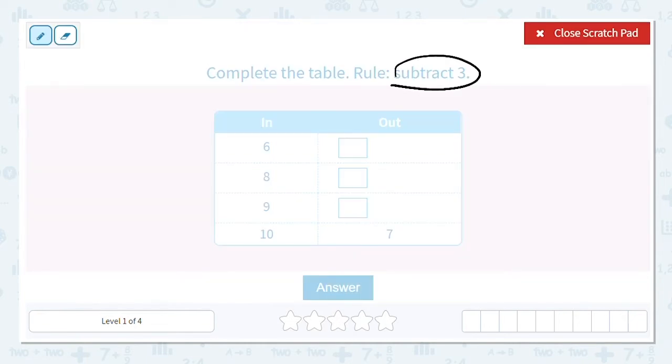And the way to check and make sure we're doing it correctly is let's do the one that is completed for us. We have 10 minus 3, that does equal 7. So every time I need to follow the rule and subtract 3. So 6 minus 3 equals 3, 8 minus 3 equals 5, and 9 minus 3 equals 6. So we have 3, 5, 6, 7.